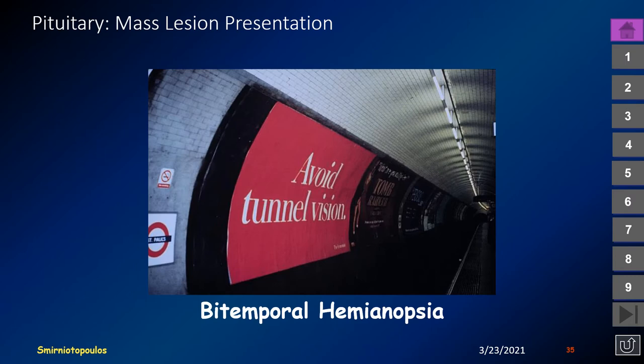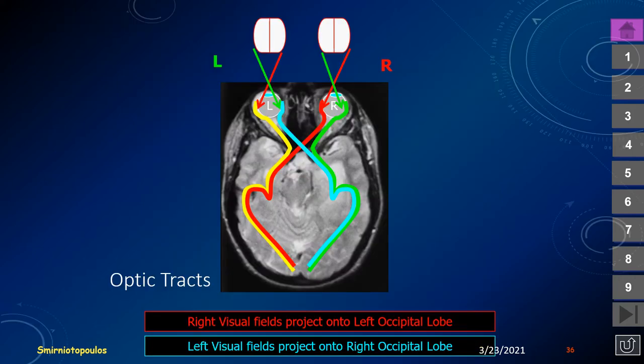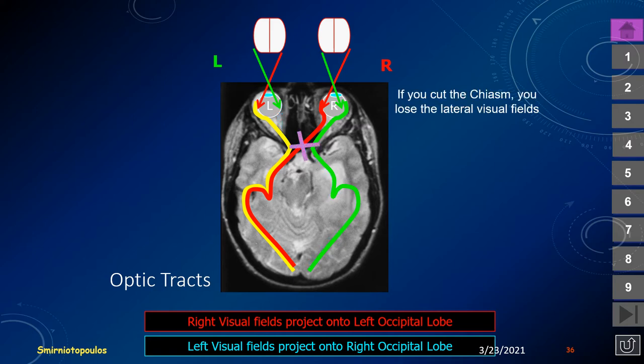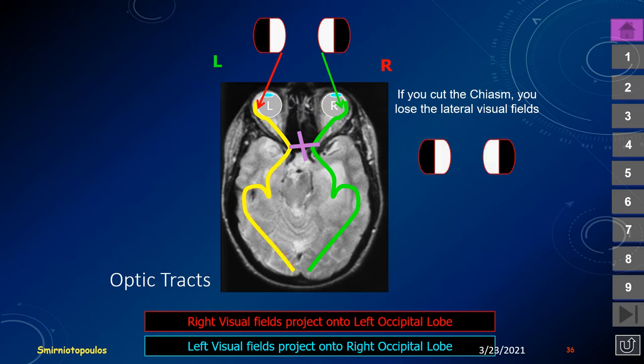Pituitary macroadenomas present because the patient loses peripheral vision — what patients describe as tunnel vision, and what healthcare professionals describe as bitemporal hemianopsia. This is easy to understand if you remember that the lens of the eye inverts the image, and the nasal fibers of the retina, which perceive vision from the lateral or temporal visual fields, cross in the optic chiasm. If we press on the chiasm, we lose the nasal retinal fibers and therefore lose peripheral or temporal vision — a bilateral temporal scotomata.